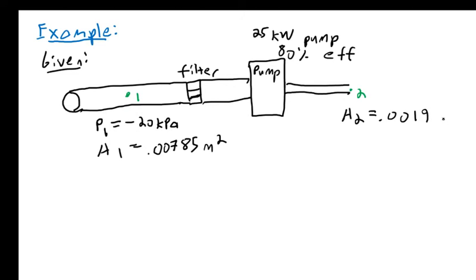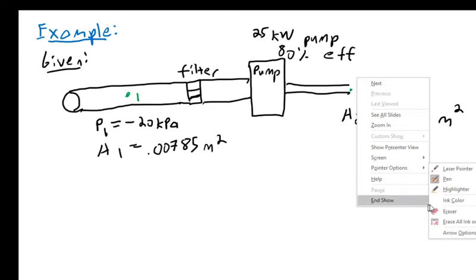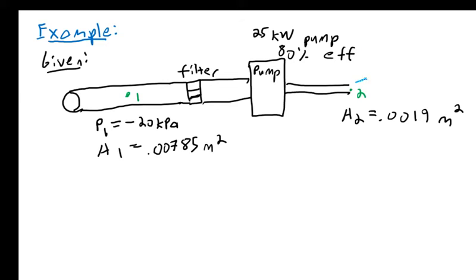Oh, and also I should mention, the pressure at point two, this is actually just exiting directly into the atmosphere. So this is exiting here, so p2 is going to be 0 atmospheres, or 0 kPa gauge pressure.